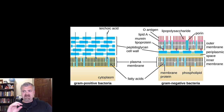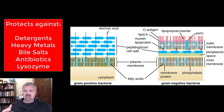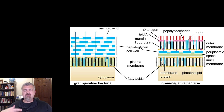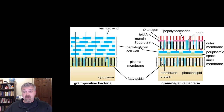The outer membrane also acts as a barrier. Things it keeps out include detergents, heavy metals, bile salts, some antibiotics, and the degradative enzyme lysozyme. This growing list of things that cannot harm gram-negative bacteria the way they can harm gram-positive bacteria is exactly why we're so concerned and looking for more modern treatments.